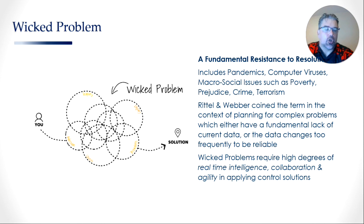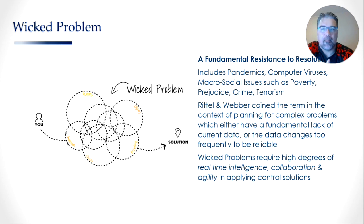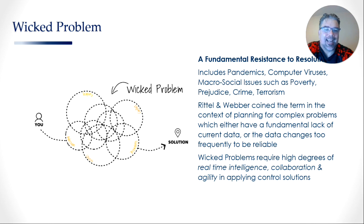Wicked risk is a risk that is continually changing and continually adapting — no one control solution can deal with it. It first came out of planning theory made popular by Rittel and Webber, roughly 1973. They coined this term in the context of planning for complex problems which either have a fundamental lack of current data or data that changes too frequently to be reliable. That continuous evolution and change is what makes it a highly wicked problem. Rittel and Webber argue that wicked problems require high degrees of real-time intelligence, collaboration, and agility in applying control solutions — it is very complex systems theory based and very popular in complex problem resolution and mega project planning.